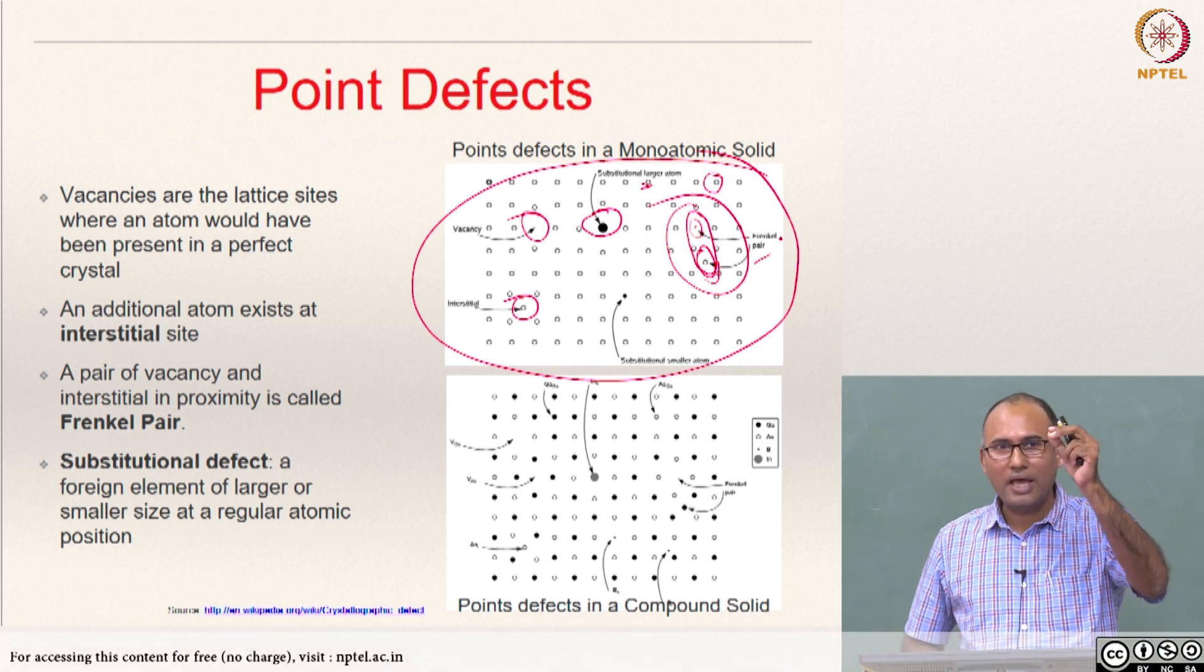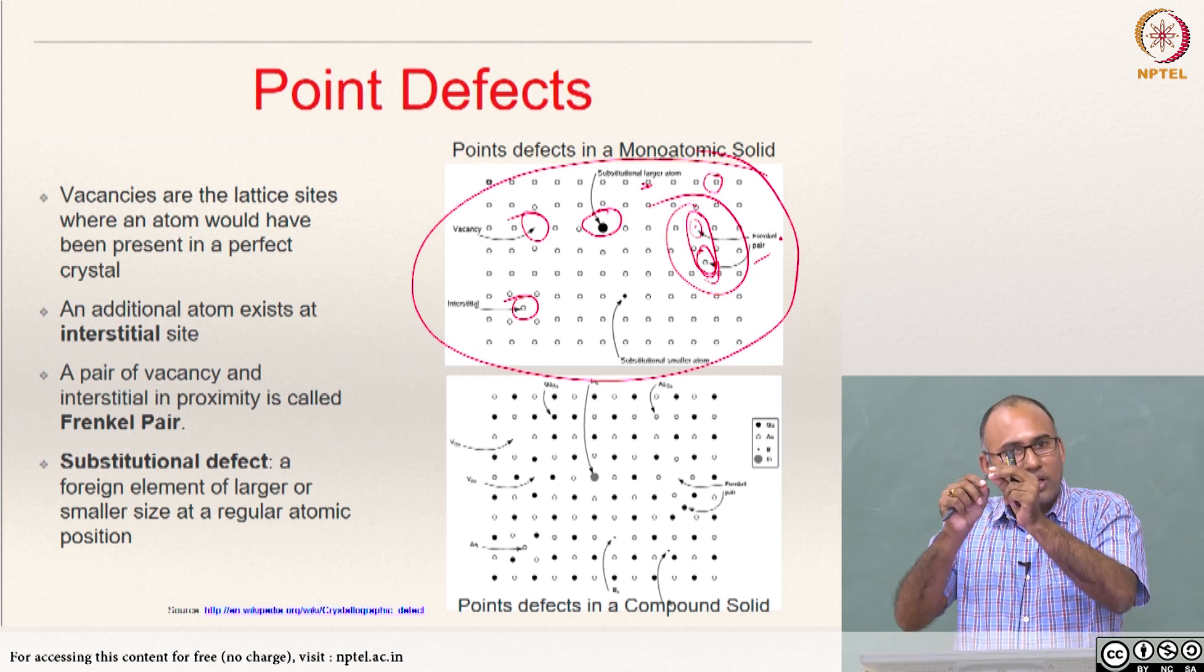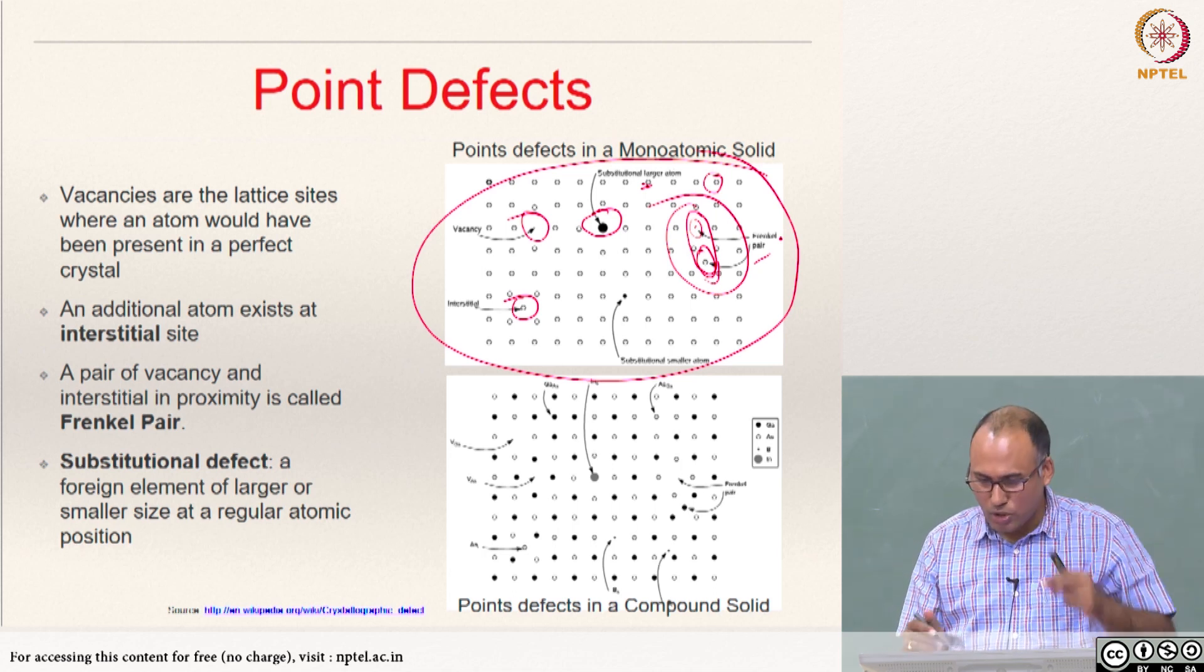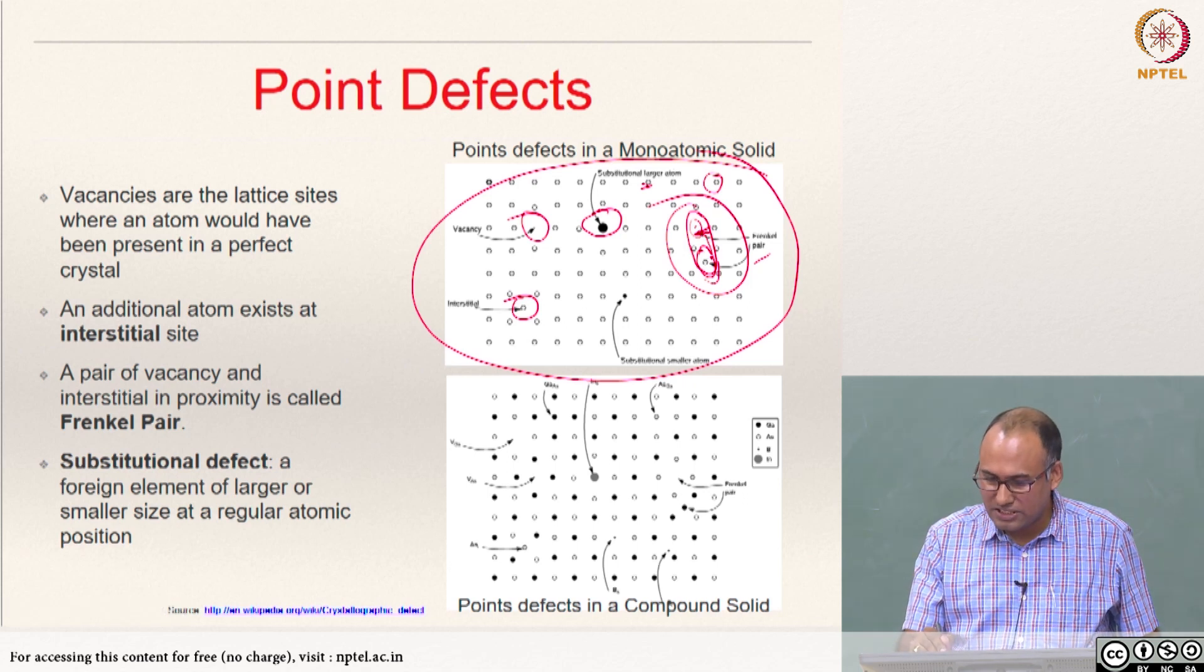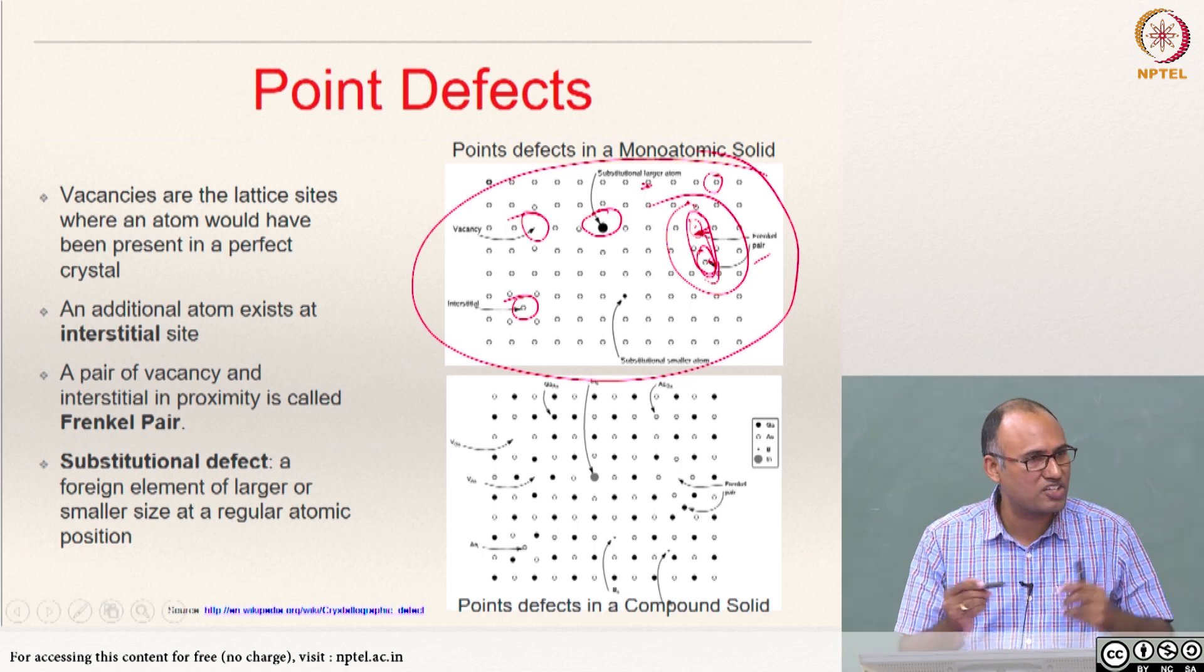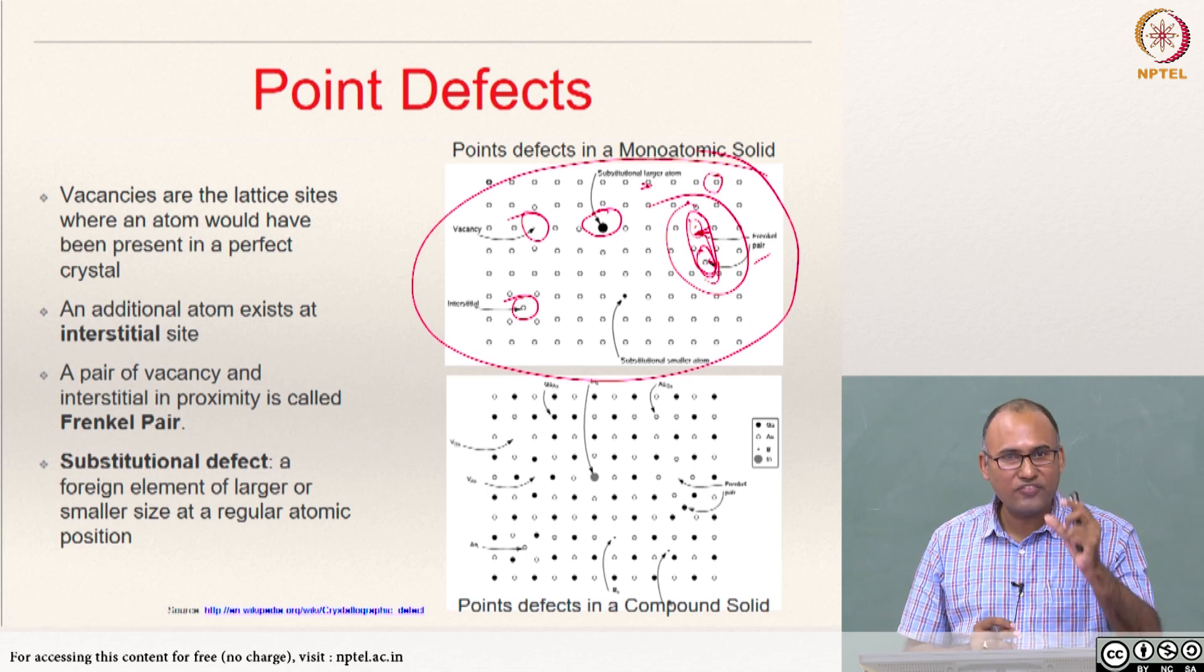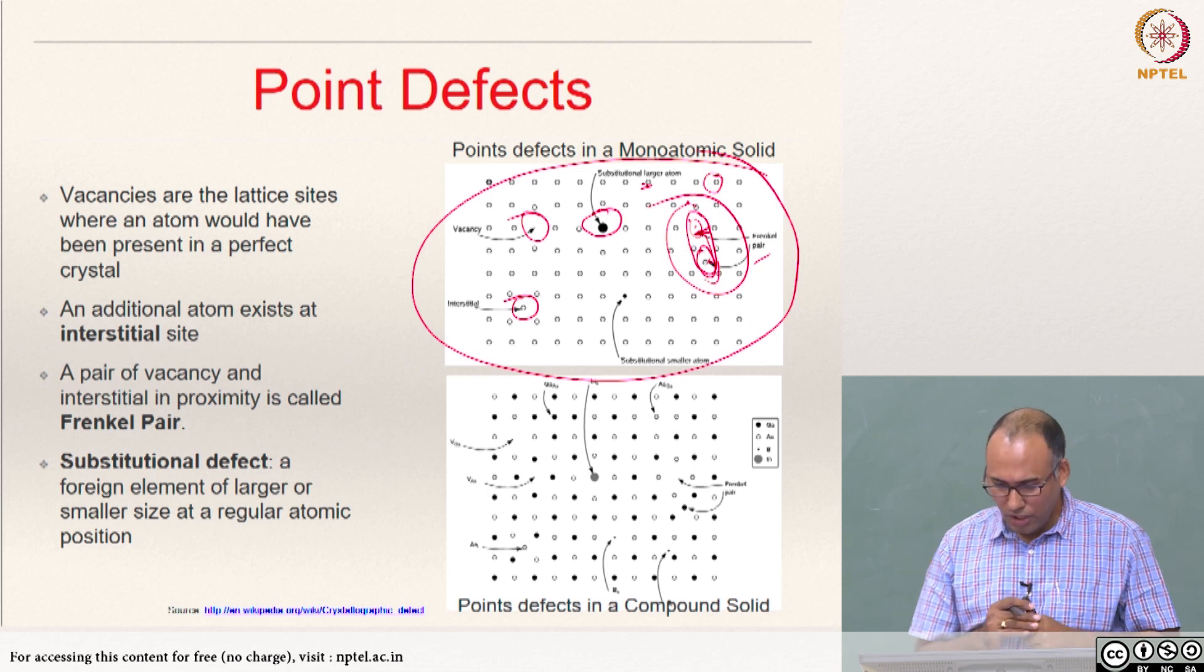It is one particular kind of defect. That means you are having a vacancy, but very close to that vacancy there is an interstitial. That means probably the atom which should have been sitting here is actually did not go there and it is hanging around there. So if this guy goes there it would have become a perfect crystal and such a pair of point defects are called Frenkel pair.